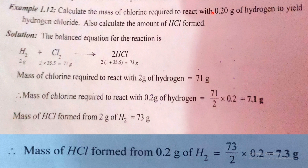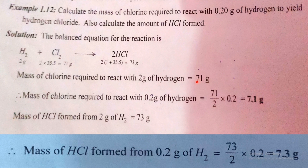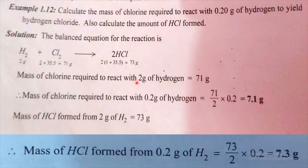What is the mass of chlorine required to react with 0.20 grams of hydrogen? The mass of chlorine required is calculated from the balanced equation: 71 divided by 2 into 0.2 is equal to 7.1 grams.